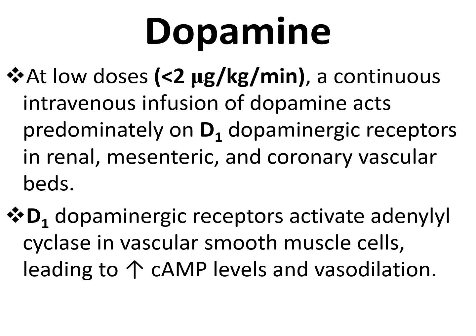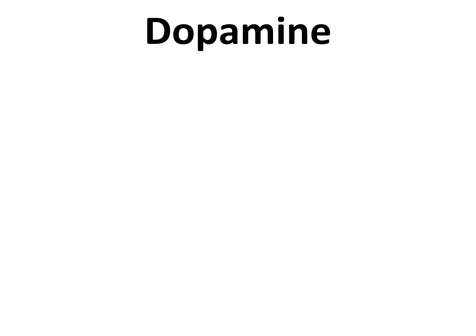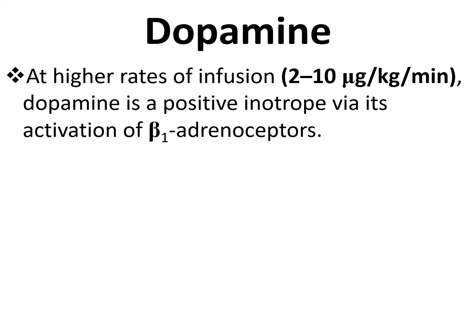D1 dopamine receptors activate adenylyl cyclase — it's a G-protein coupled receptor — increasing vascular smooth muscle relaxation. At medium doses of 2 to 10 micrograms per kg per minute, dopamine can also act on beta-1 receptors, which are predominantly located on the myocardium, increasing heart rate and force of contraction.